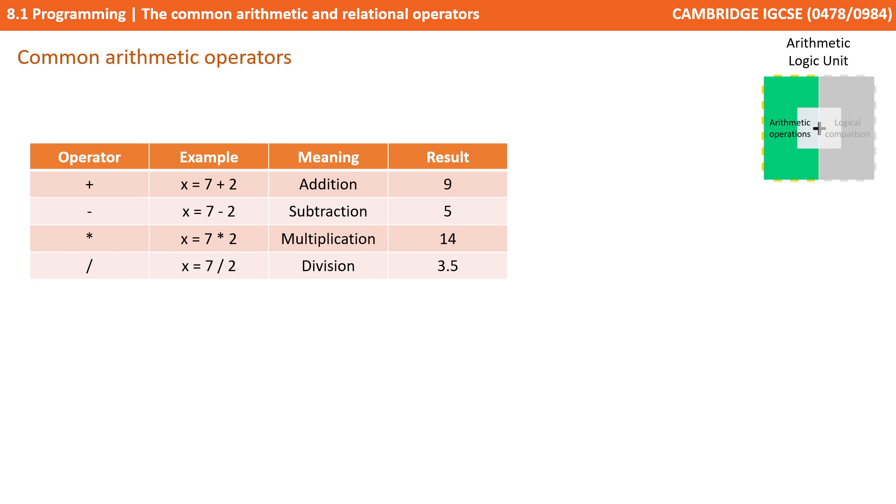Next, we have the division symbol, and that's a slash. So here, we've got 7 divided by 2, and x therefore is equaling 3.5. So they're the four standard operators: addition, subtraction, multiplication, and division.